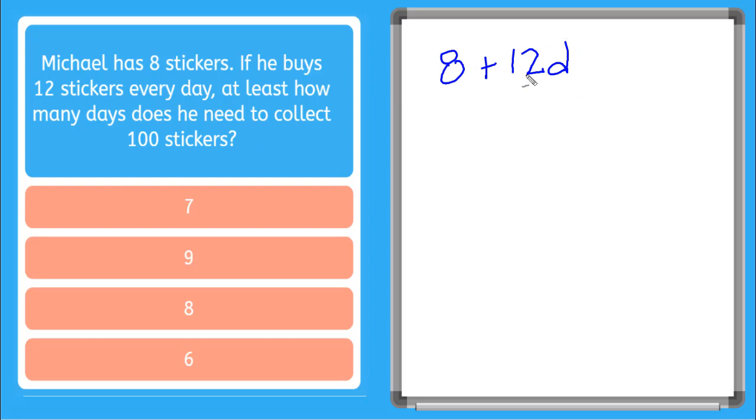So if he has 8, he's getting 12 more every day. How many days does he need to collect 100 stickers? So we need him to have greater than or equal to 100 stickers. And now we need to solve this equation for D.